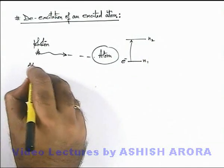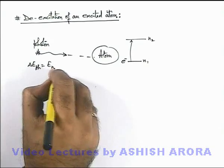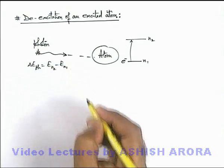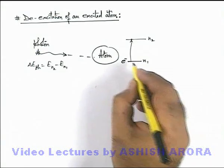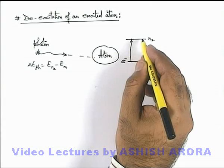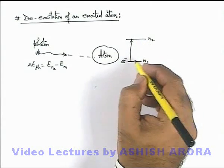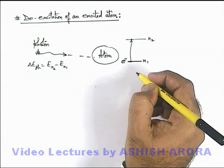If the photon energy is equal to the difference of the two energy levels, En2 minus En1, then it will excite. But as we know that higher states in an atom are states with higher amount of energy of electron, so lower states are always more stable compared to the higher energy levels.